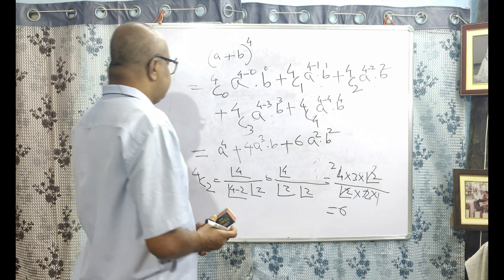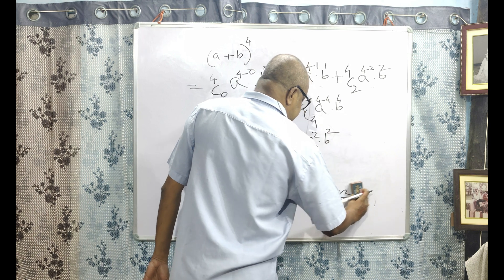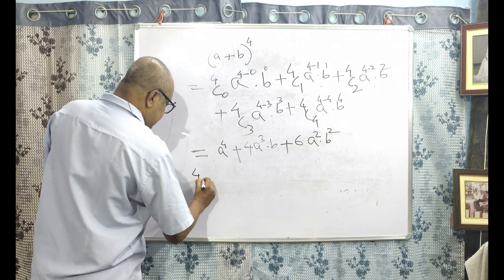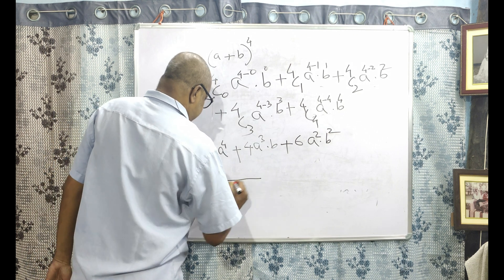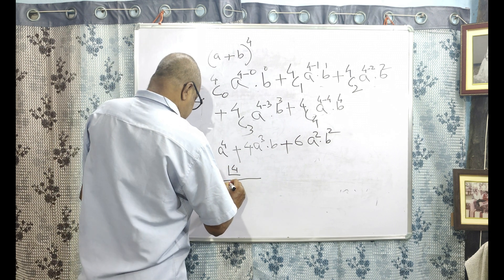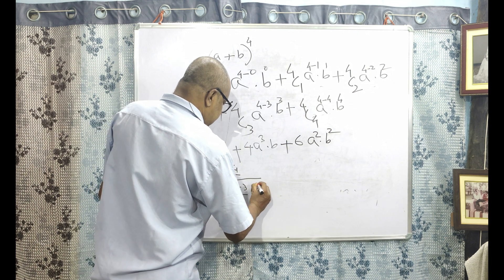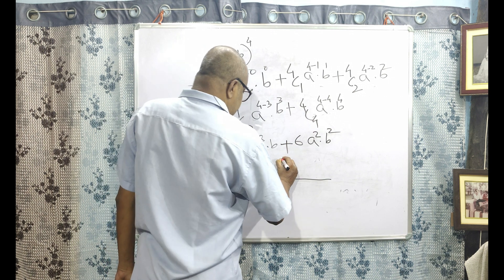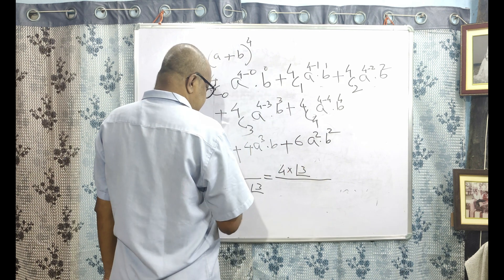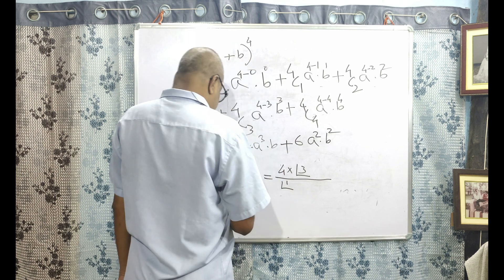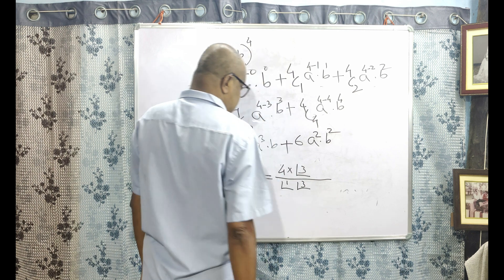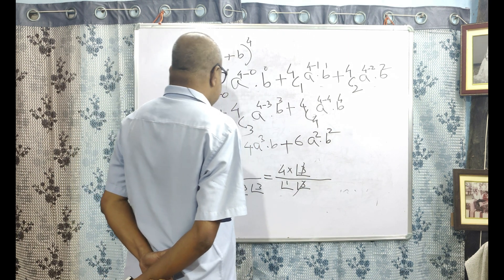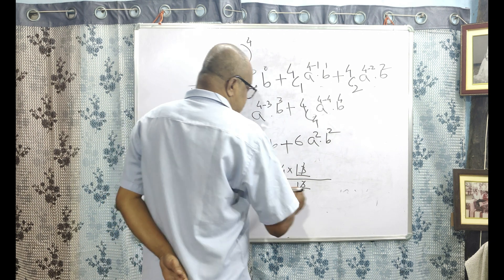Next comes 4C3. This is equal to factorial 4 divided by factorial 4 minus 3 times factorial 3, which is factorial 4 divided by factorial 1 times factorial 3. We can write factorial 4 as 4 into factorial 3; factorial 3 cancels, and factorial 1 is always 1, so 4C3 equals 4.